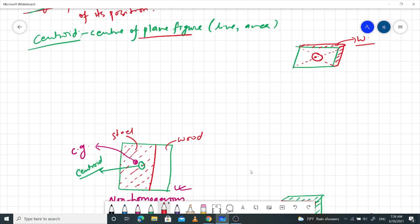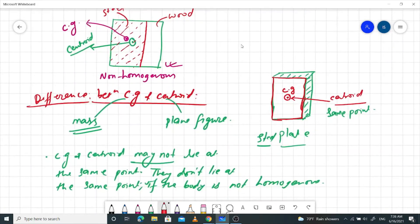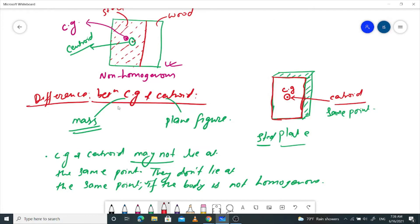The difference between CG and centroid. The difference between CG and centroid involves the mass object that is the center of the plane figures.